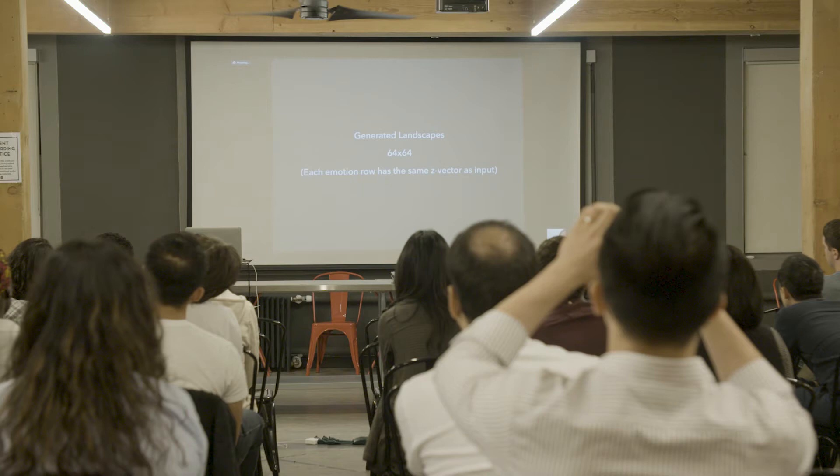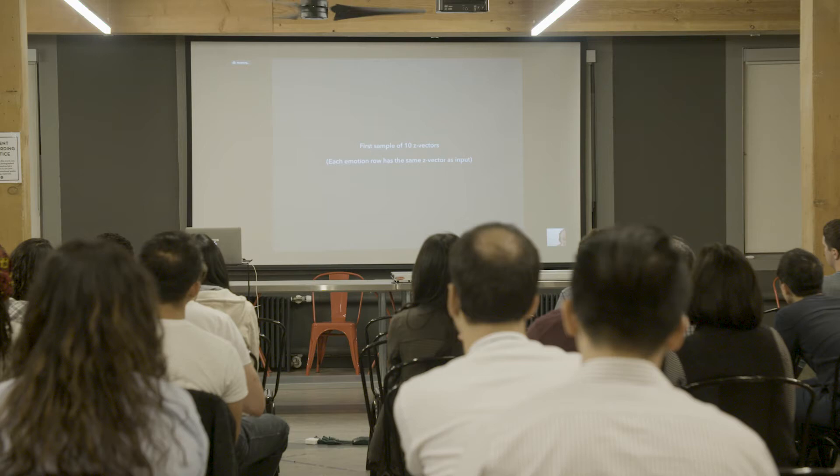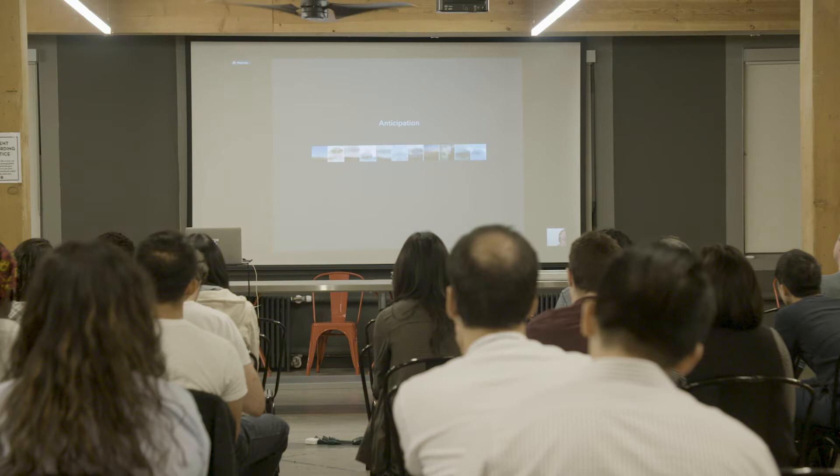These are 64 by 64 pixel generations. Each emotion row has the same Z vector as input. Here's one set — so here's anger, anticipation, and disgust, which you can see has a lot of browns and greens.